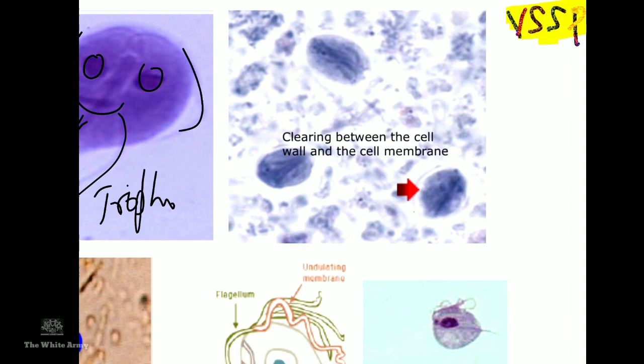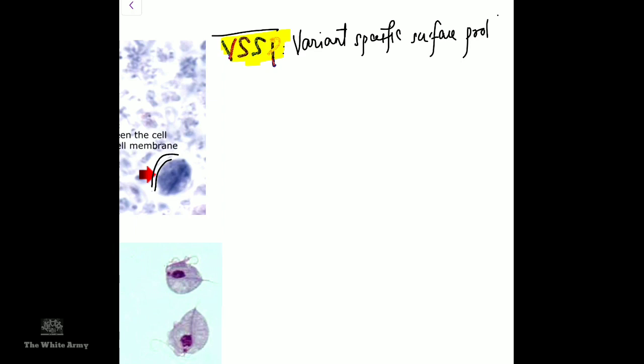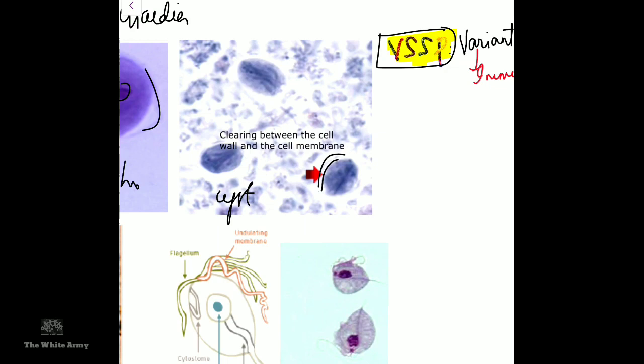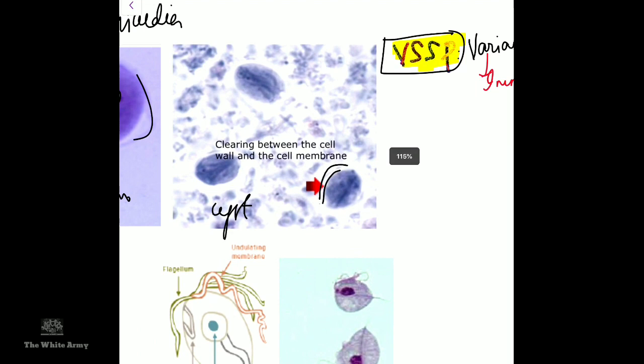This is the cyst of Giardia, which shows a typical clearing inside. One important antigen to remember is VSSP — Variant Specific Surface Protein — which helps in immune evasion. Once the immune system develops memory against a particular surface antigen, Giardia changes its entire surface antigens, requiring more time for the immune system to produce antibodies.